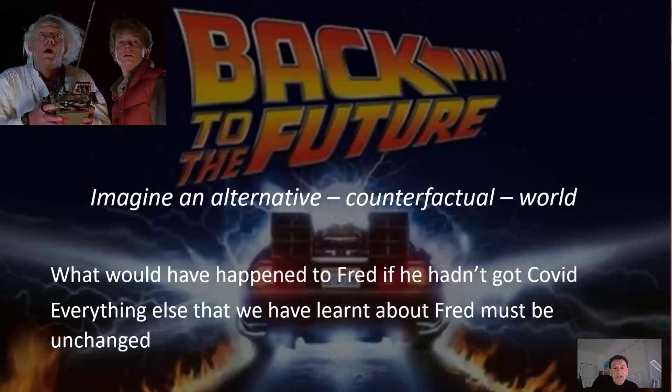Crucially, by virtue of knowing that Fred died after getting Covid, we learn from the real world that compared to the average 82 year old, Fred is more likely to also have had some critical pre-existing illness. And this probabilistic knowledge must be retained in the counterfactual world.